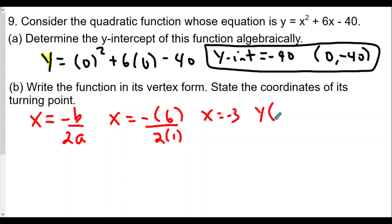We plug negative 3 in for x: y equals negative 3 squared plus 6 times negative 3 minus 40. So y equals 9 minus 18 minus 40. 9 minus 18 is negative 9, minus 40 equals negative 49. So the vertex is going to be negative 3 comma negative 49. This is our vertex.